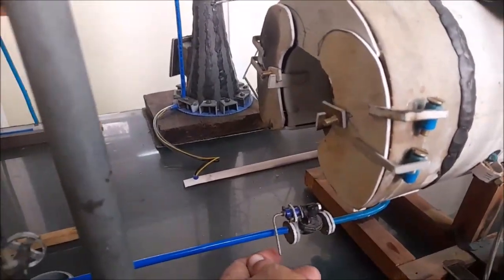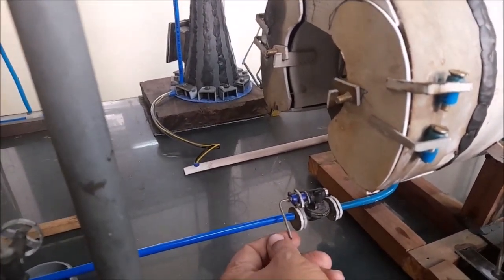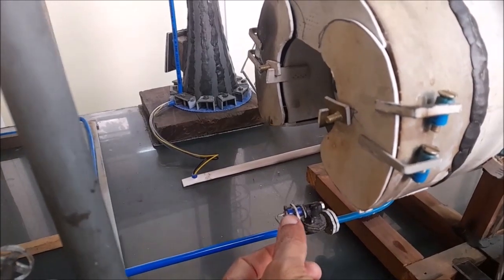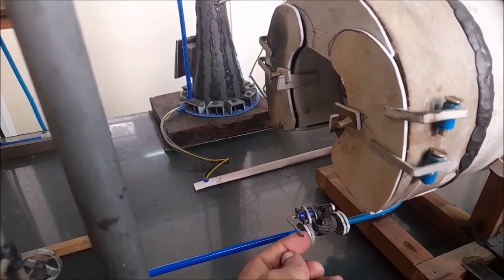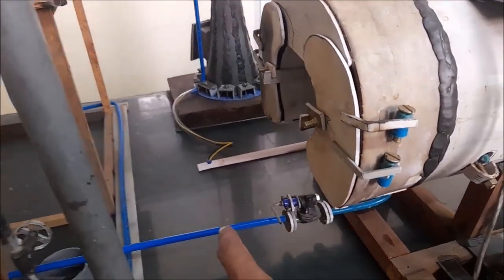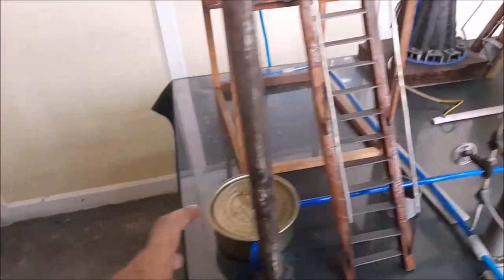At the bottom there is a blowdown valve of the boiler. This is a rack and pinion type valve. We can open it. Now the valve is closed. Now the valve is open. This is the blowdown line; it is going to the blowdown pit.